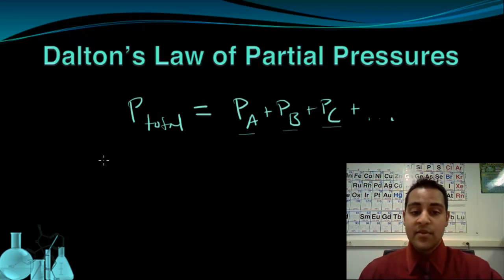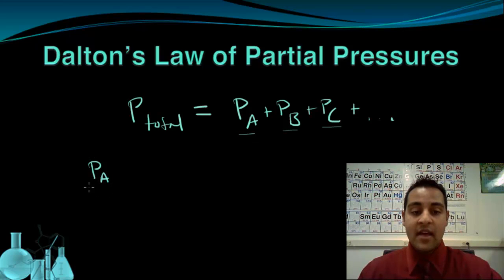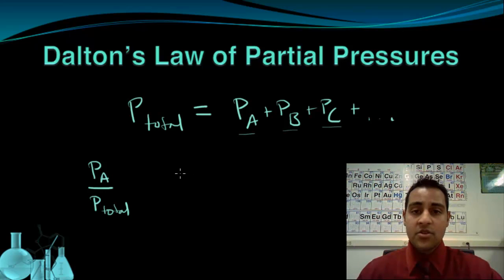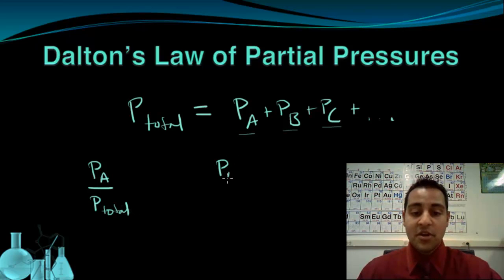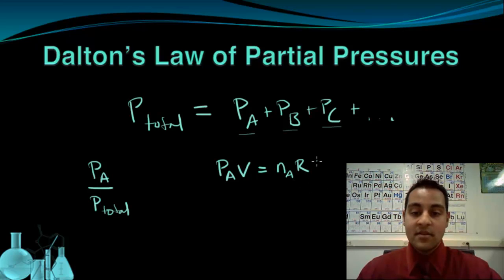Something interesting happens if I look at the partial pressure of a single gas — let's take gas A — and look at the relationship between that and the total pressure. To examine this ratio of the partial pressure of A to the total pressure, I'm going to use the ideal gas law. The partial pressure of A times its volume equals the moles of A (N_A) times the gas constant times its temperature.